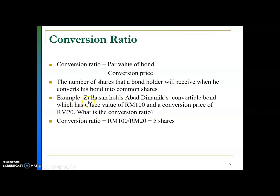For example, Zul Hassan holds Abad Dynamics convertible bond, which has a face value of 100 — par value dia 100 — and a conversion price of 20. What is the conversion ratio? Just take the face value bahagi dengan conversion price. Bila kita convert bond, you will get 5 shares. It's the number of shares that you get when you convert the bond into shares. So that is conversion ratio.